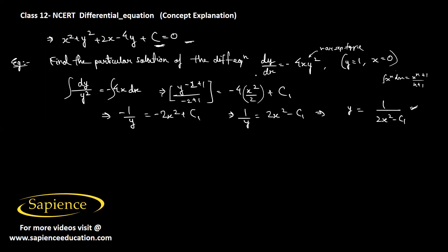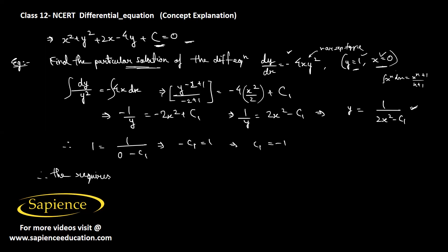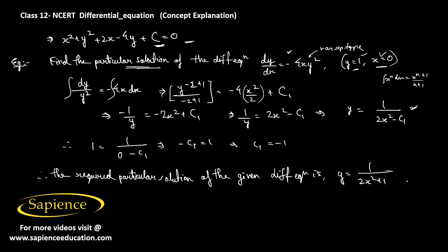This is the general solution, but we need the particular solution using the condition x equals 0, y equals 1. Substituting: 1 equals 1/(0 − c₁), so −c₁ equals 1, meaning c₁ equals −1. Substituting c₁ equals −1 into the general solution, the required particular solution of the given differential equation is y equals 1/(2x² + 1).